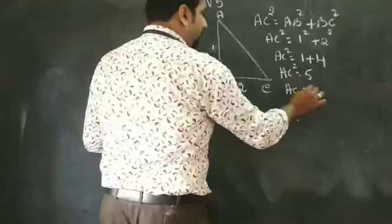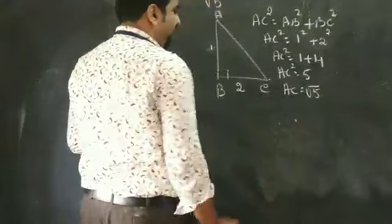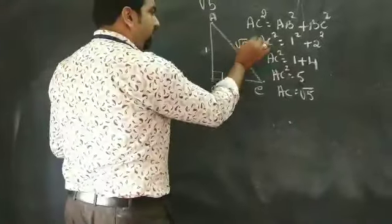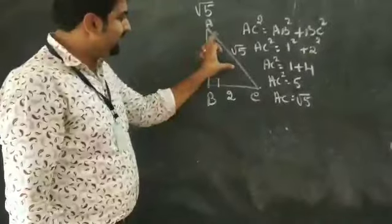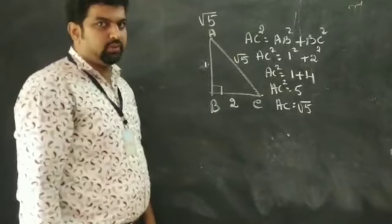And AC is equal to, when the square root on the other side becomes square root, root 5. So this side AC is nothing but root 5.